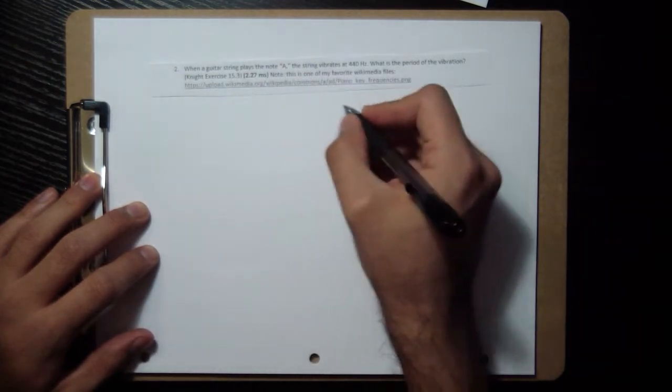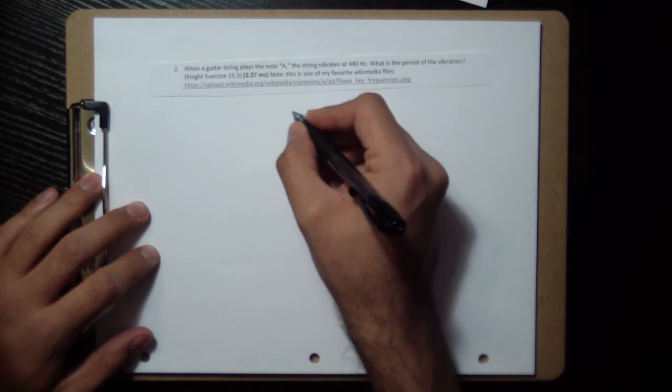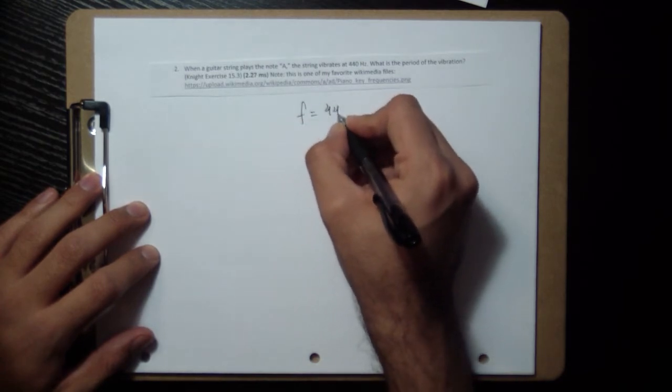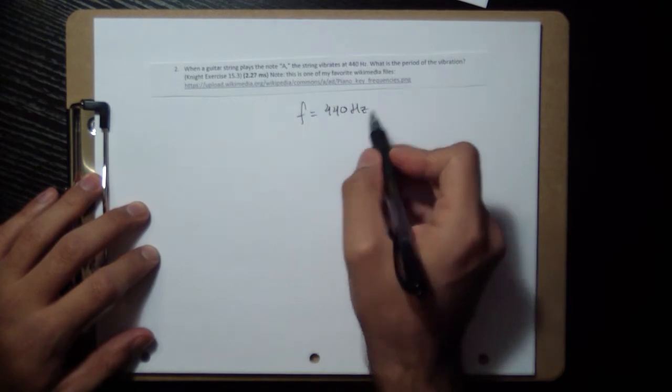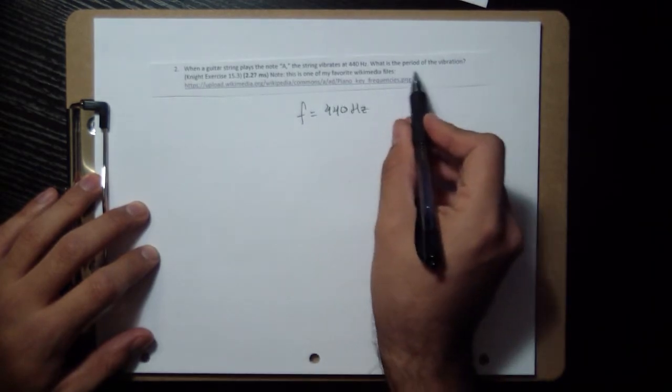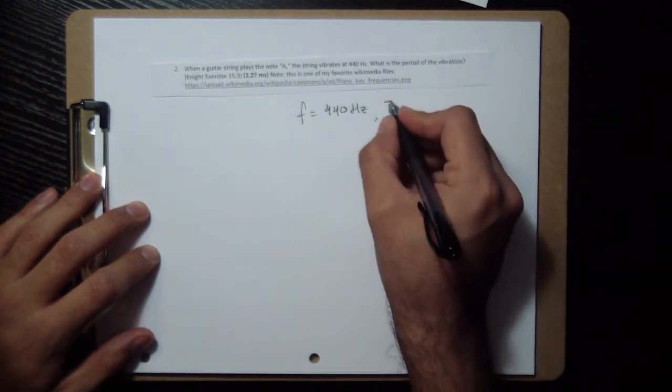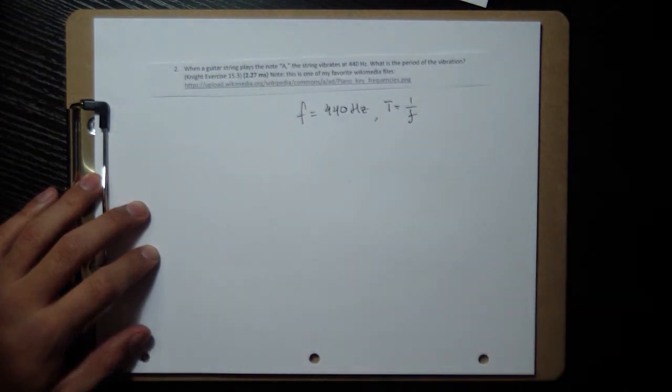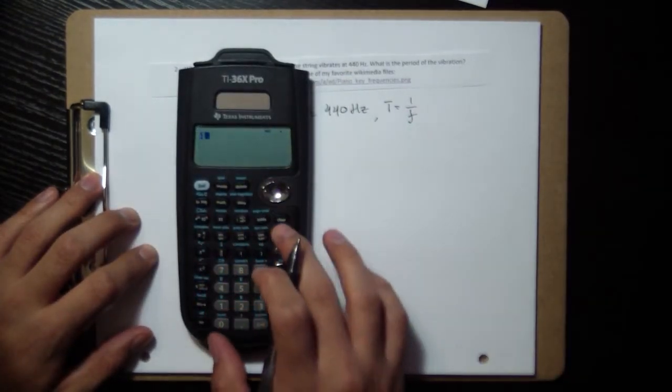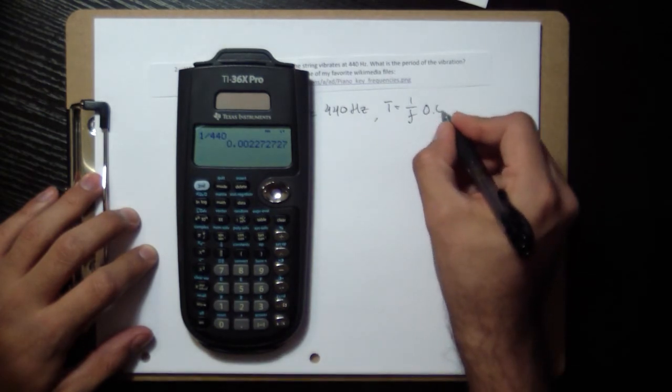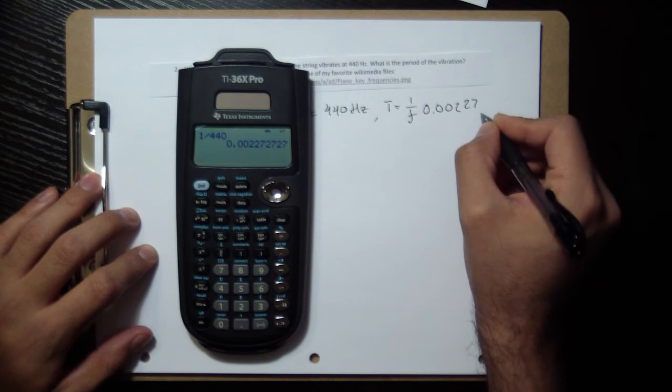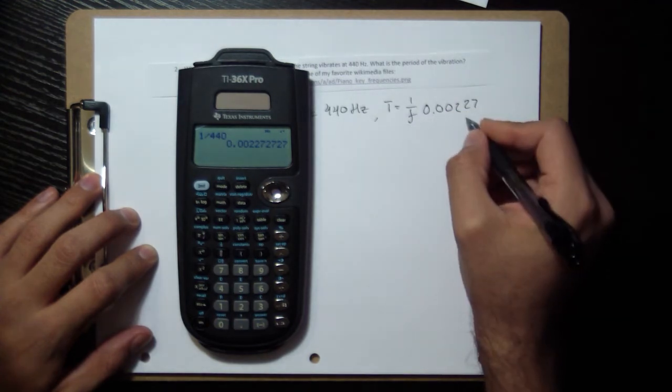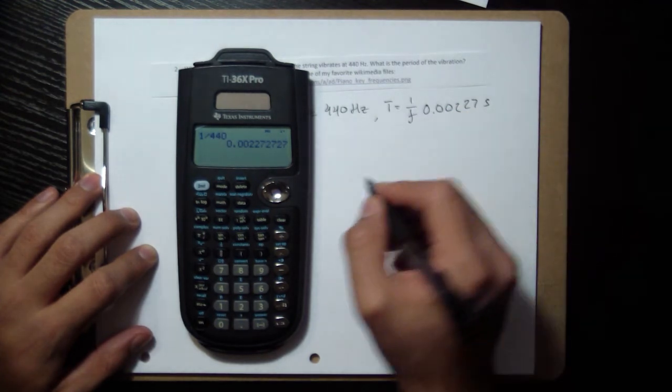We know frequency is equal to 440 Hertz. All we need to do is say, okay, that's the frequency and I want to know what the period is. The period is 1 over the frequency, so it's going to be 1 over 440, which equals 0.00227. When you do 1 over f, you end up with seconds.